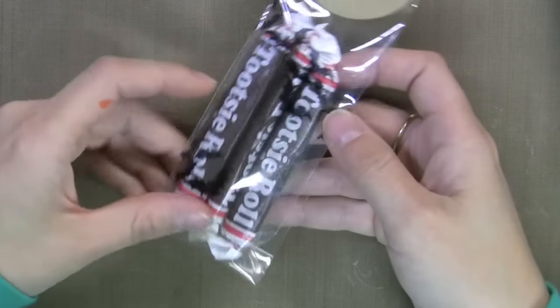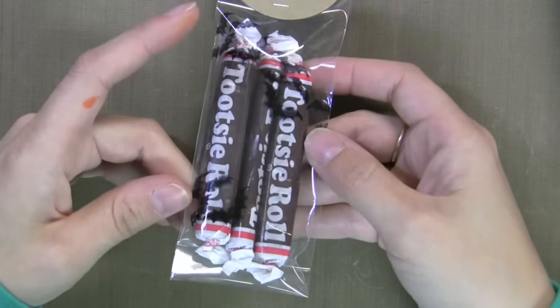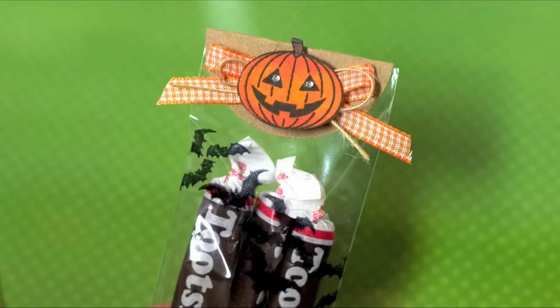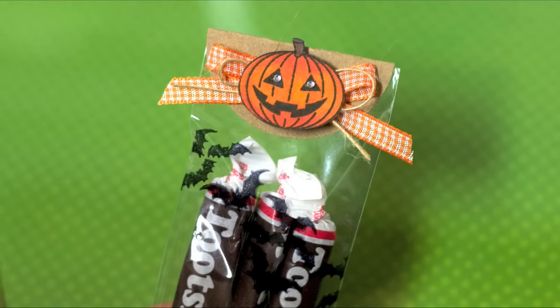And then I put little staples in and it keeps it nice and secure in there and you can see the bats. And then I just add some stamped images and some ribbon right to the top. Really quick and easy to do.